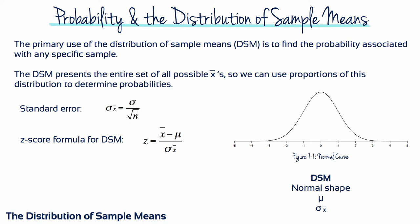The primary use of the distribution of sample means is to find the probability associated with any specific sample. The distribution of sample means presents the entire set of all possible sample means so that we can use proportions of this distribution to determine probabilities. The formula for standard error expresses the relationship between standard deviation and sample size. The following examples demonstrate this process.